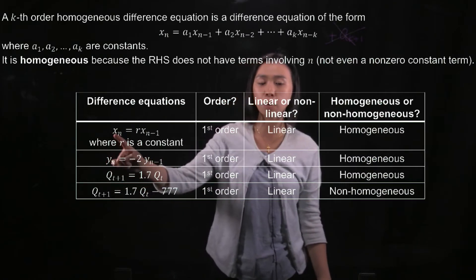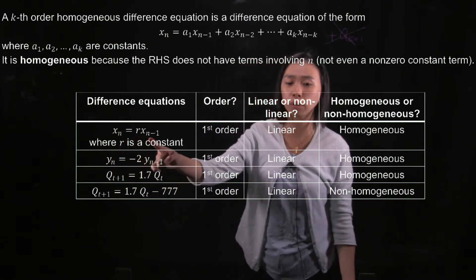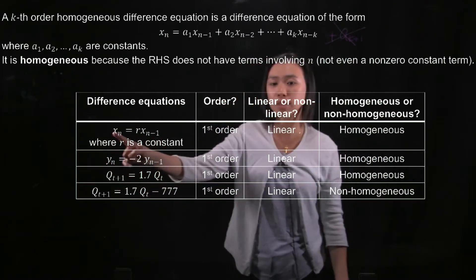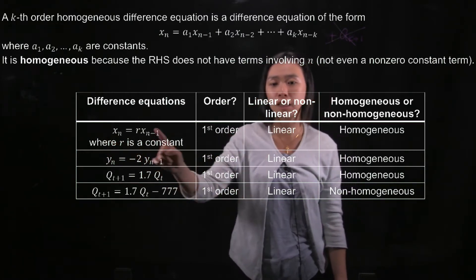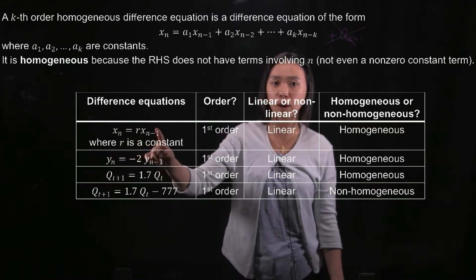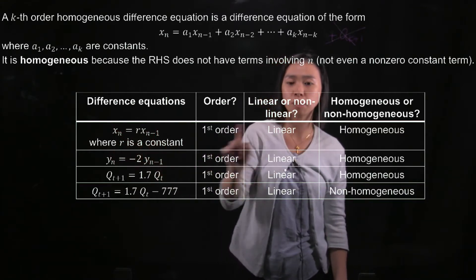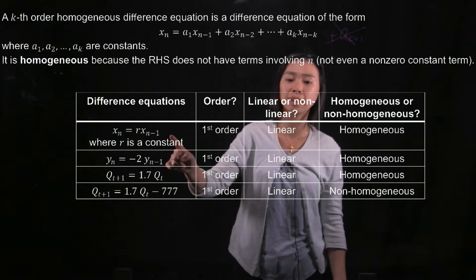In this first example, xn equals r multiplied by xn minus 1. So xn depends on the previous one term, that's why it's of the first order. It is linear because xn and xn minus 1 are of power 1. It is homogeneous because there is no non-zero constant term adding at the end.